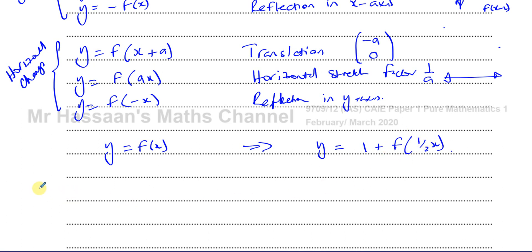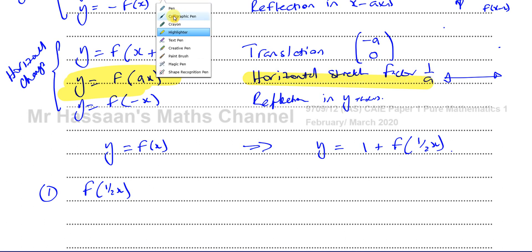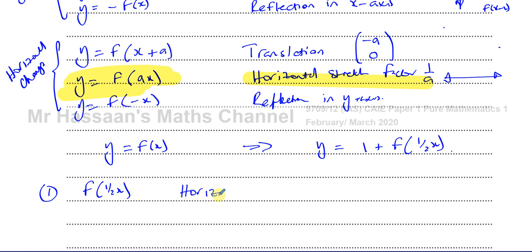So let's start with f of a half x and describe what that causes. f of a half x — the change is inside the function, where we are multiplying the x inside the function. We're replacing x with a half x. We know this is a horizontal stretch of factor 1 over a, so it's a horizontal stretch of the reciprocal of a half. So this is a horizontal stretch — also called a stretch in the x direction — of factor 2. The reciprocal of a half is 2.